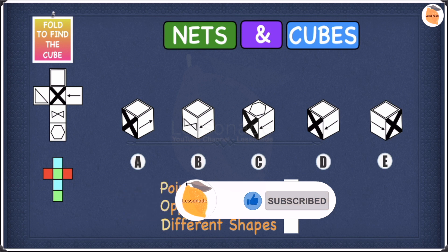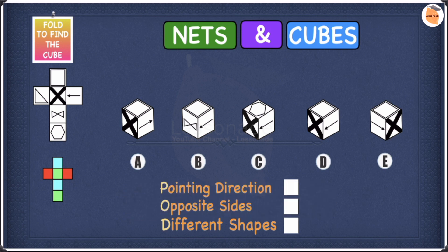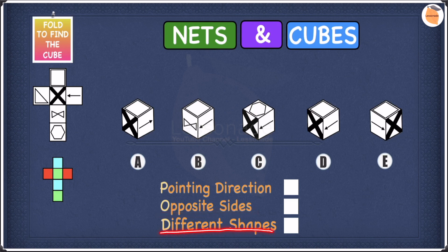Let's have a look at this example. We're going to see which one of these cubes can be made from the net. This is a nets-to-cubes example. For this example we're going to use POD to help us. P stands for pointing direction, O stands for opposite sides, and D stands for different shapes.